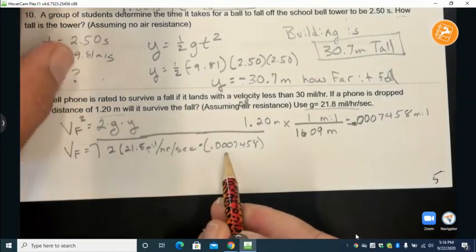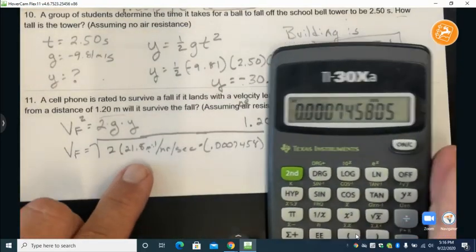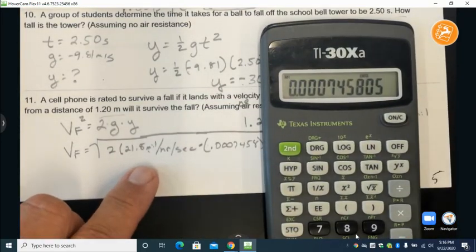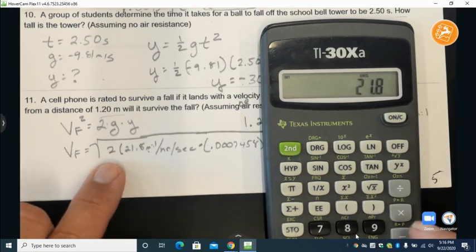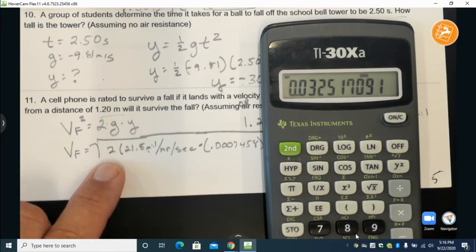So we're going to take that answer, multiply it times the twenty one point eight, multiply it times the two.